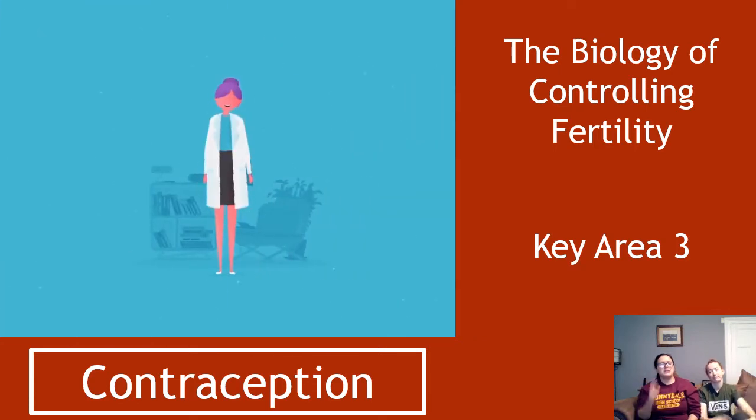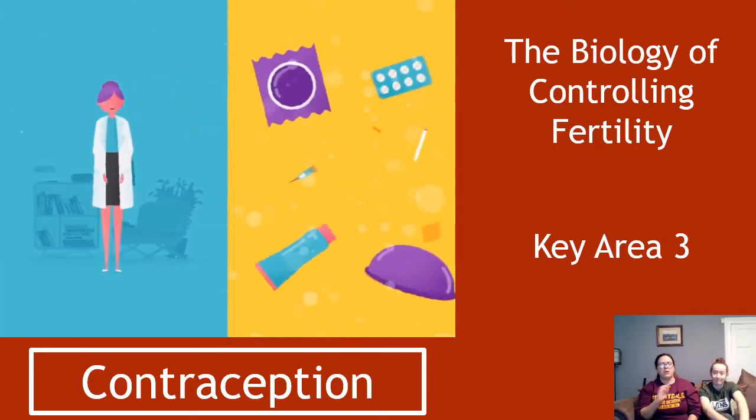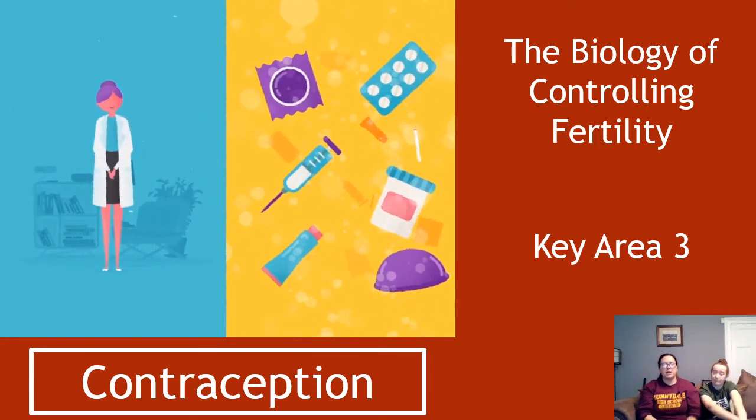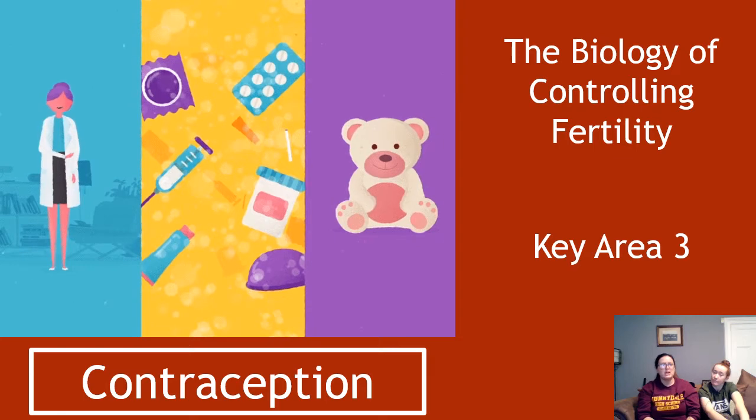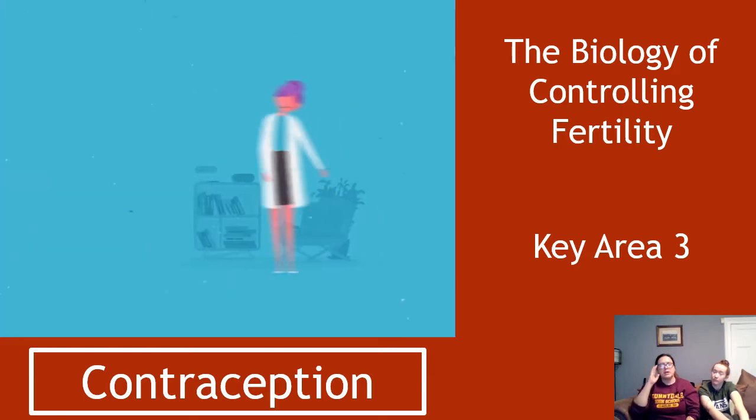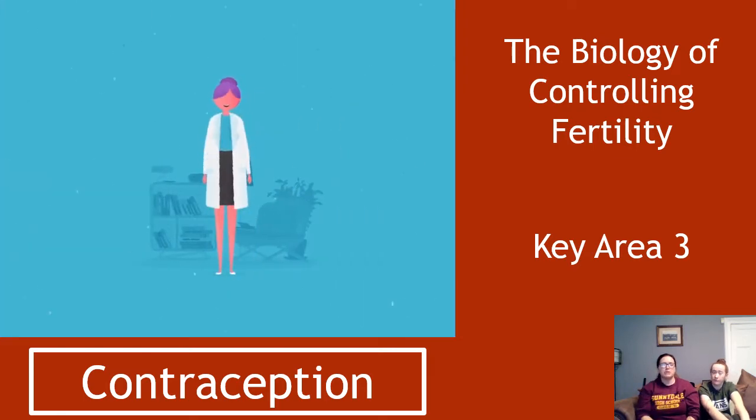Hiya! So this is section 3 of key area 3 of unit 2 of Higher Human Biology and we are looking at contraception.